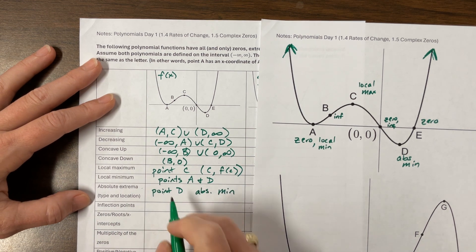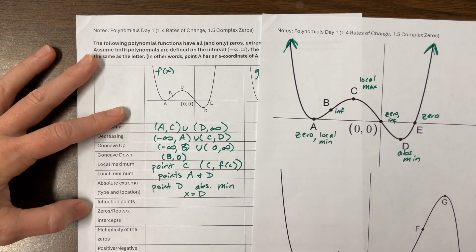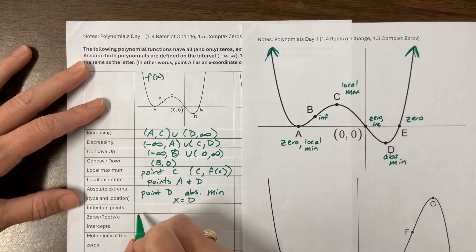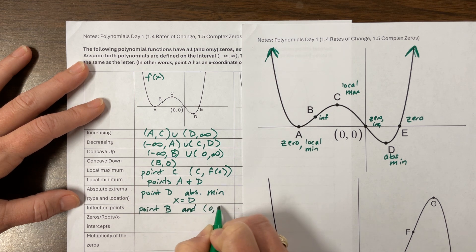This pen is really powerful. I don't know how it's so dark, but I'm bleeding through everything. Point D is our absolute minimum. So the location would be when X is equal to D. Maybe the best way to say that.